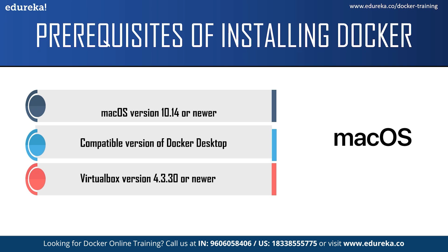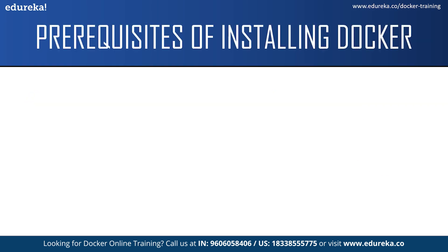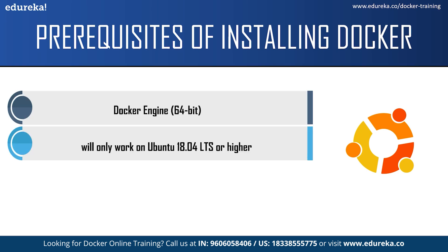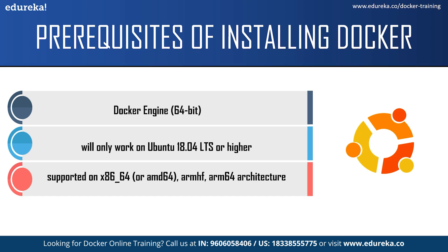And finally there is the minimum 4GB RAM requirement. For Ubuntu, you need the Docker Engine to be installed. Only Ubuntu 18.04 LTS or higher will support Docker Desktop. The required architecture is x86-64 AMD64, and the 4GB minimum RAM requirement applies to all systems.